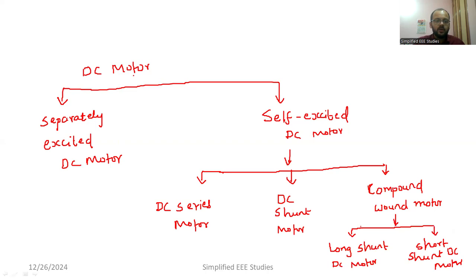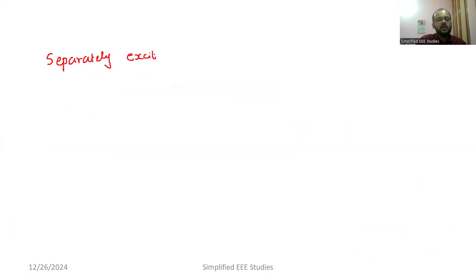We have briefed up the types of DC motor in the form of a flow chart. Now we are going to discuss individually the significance of each type. Let us pay attention — I am going to discuss about separately excited DC motor. What do you mean by separately excited DC motor?